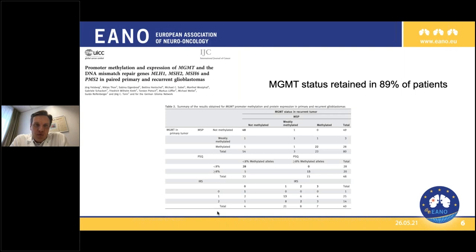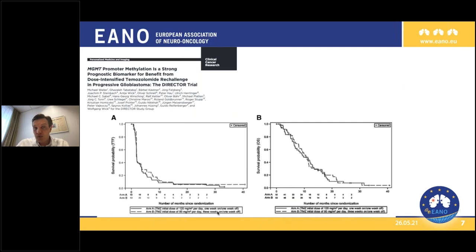First of all, MGMT status is relatively stable if you compare newly diagnosed disease to recurrent glioblastoma. In about 90% of cases, MGMT promoter methylation status is retained. So why not use this marker also for therapy decisions in the recurrent setting? Here we come to some trials that give us some information on this topic.